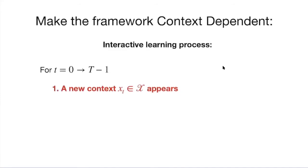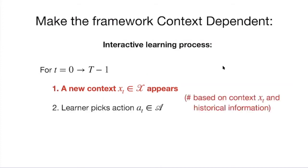Let's look at the model. This is again an interactive learning process. Different from the multi-armed bandit setting, every day at the beginning of the day there's a new context X_t that appears. Think of the context space as embedded in some D-dimensional Euclidean space — some feature or context shows up every day. Based on history information and the new context, the learning algorithm picks an action A_t from the action set of K many actions.